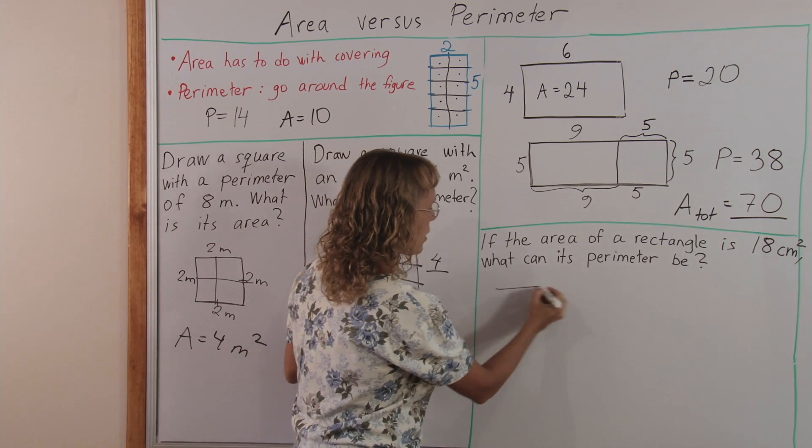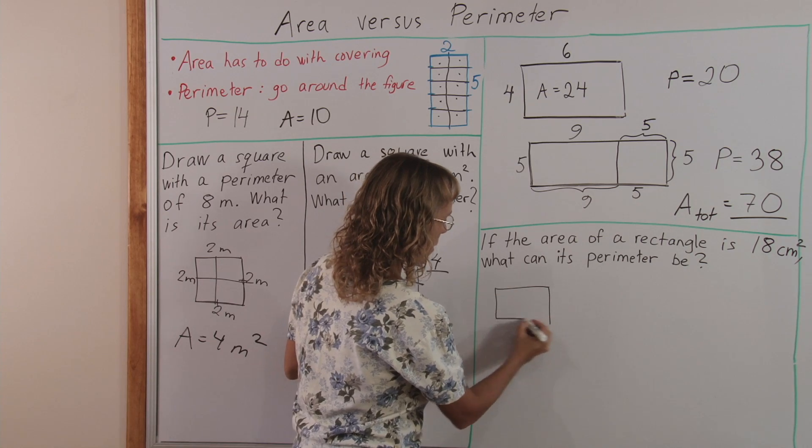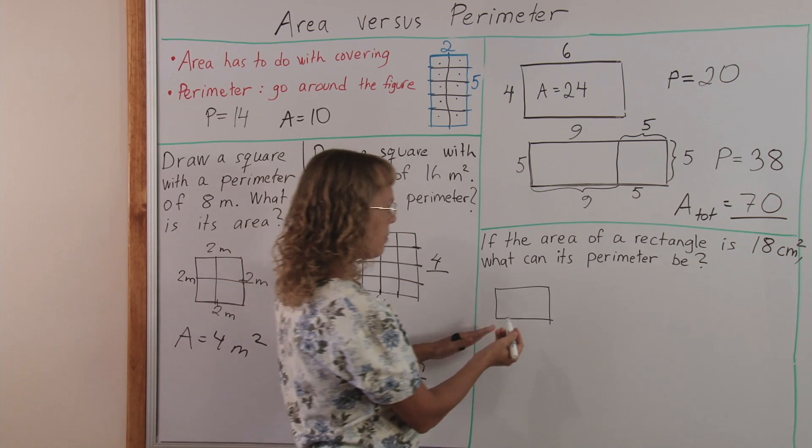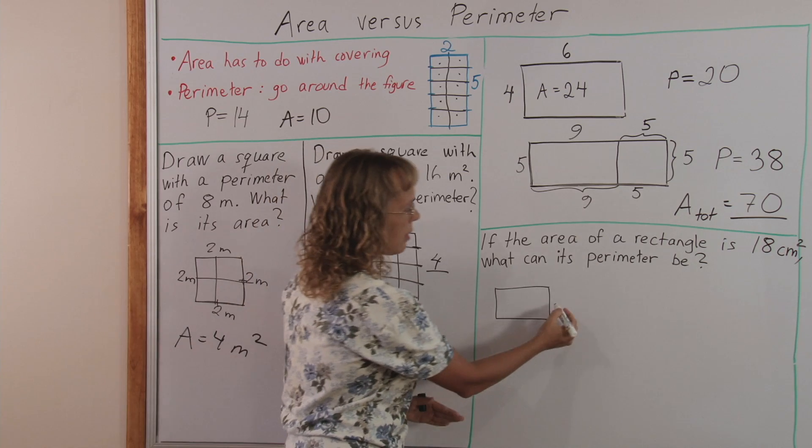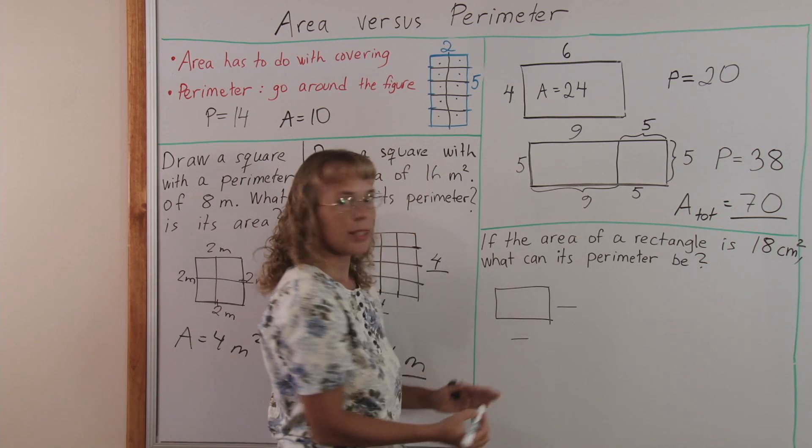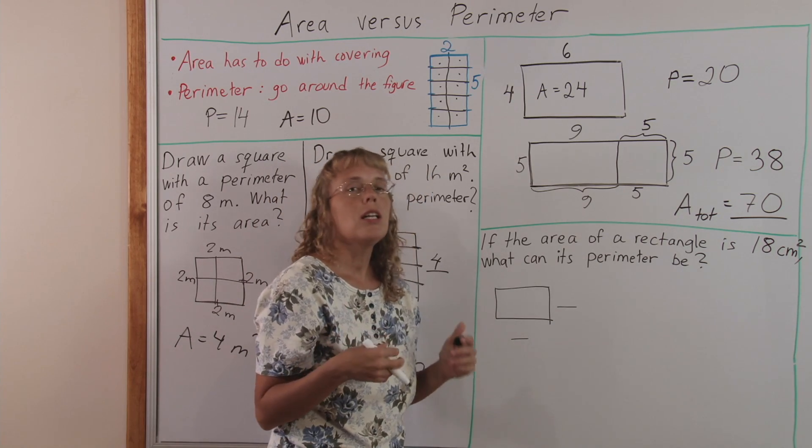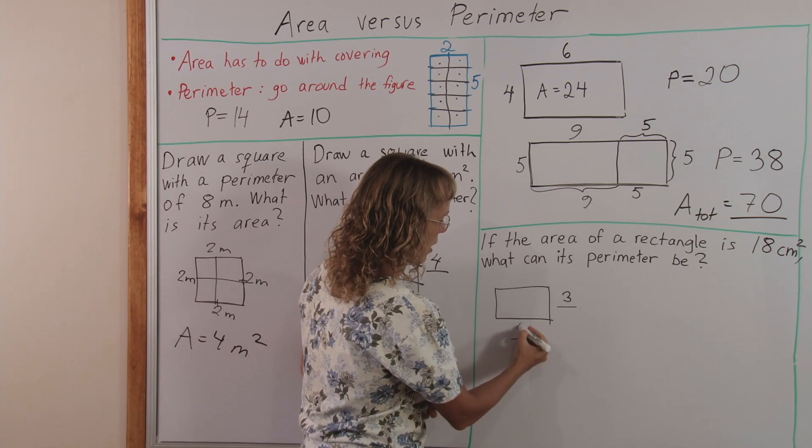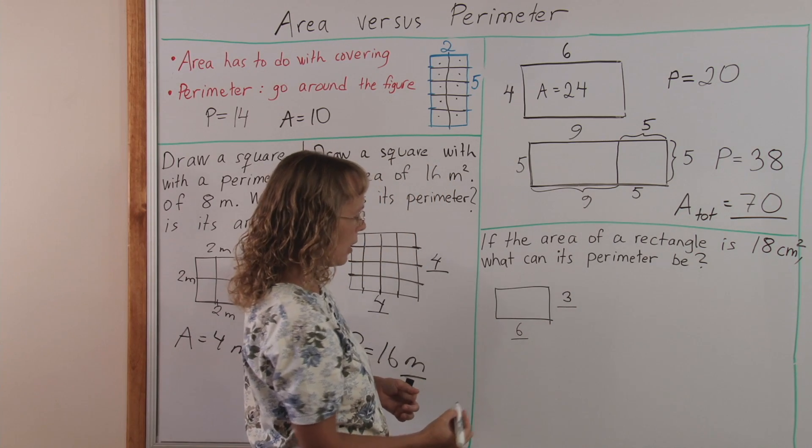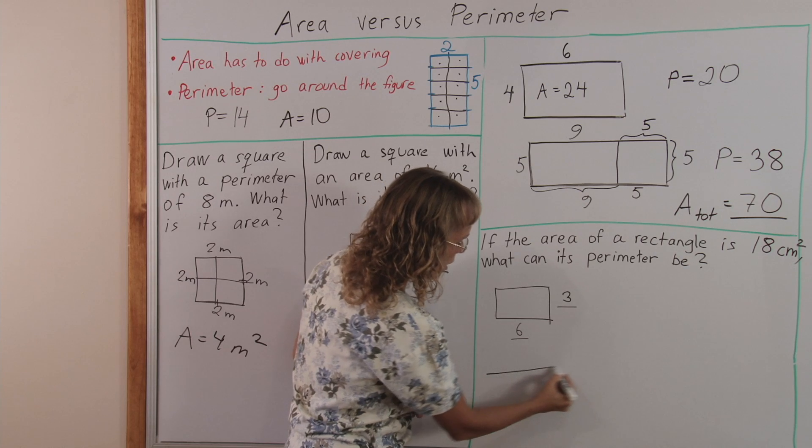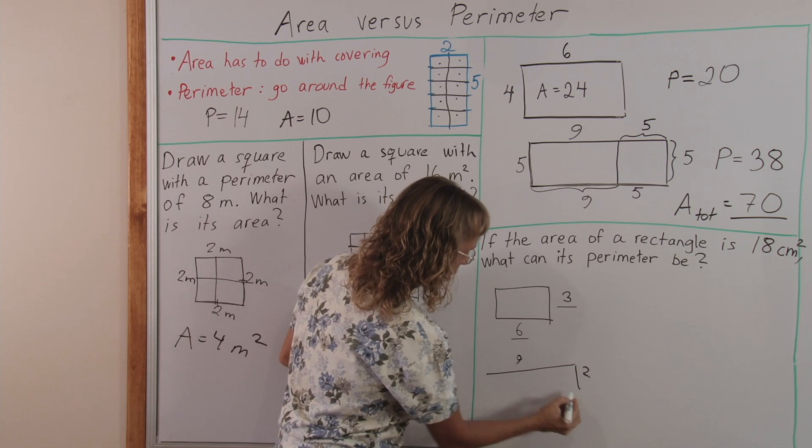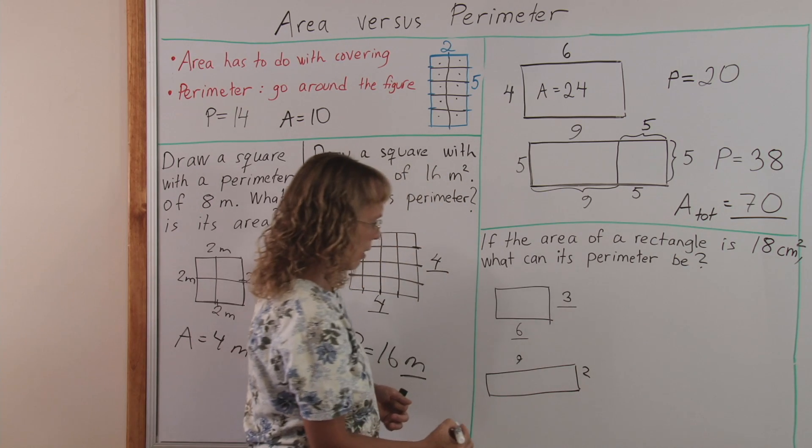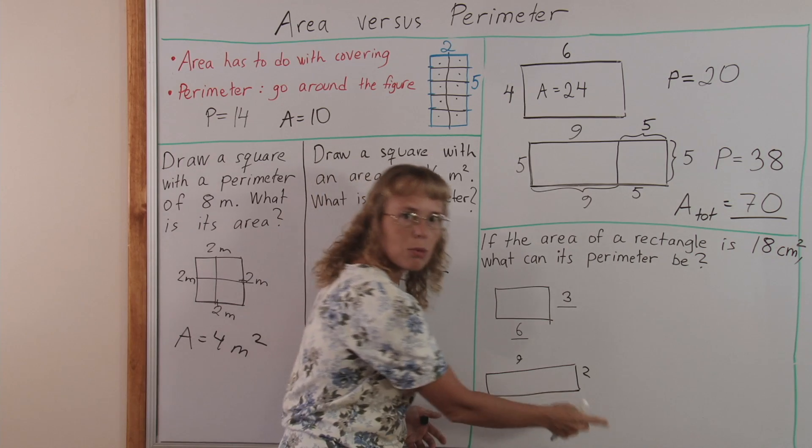And let's see, I'll sketch one. If the area is eighteen, then this side times this side is eighteen. So I need to find two numbers multiplied, give me eighteen, for example, three and six. And then I could make another one here, let's make it two and nine, right? And then I could make one where there's one and eighteen.